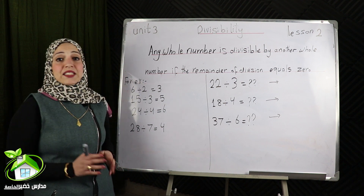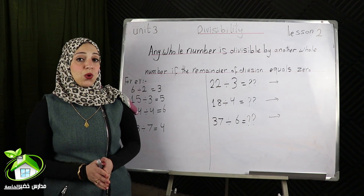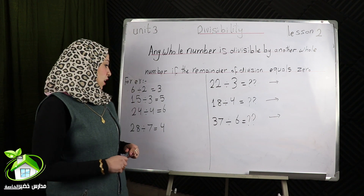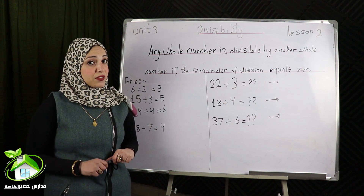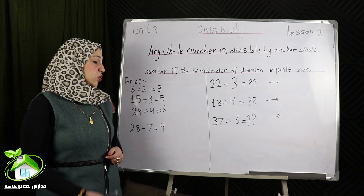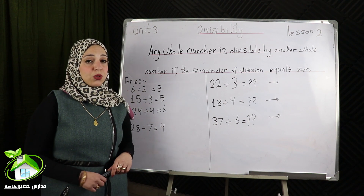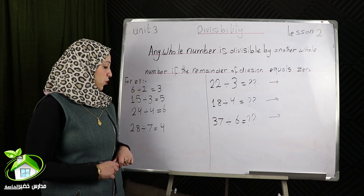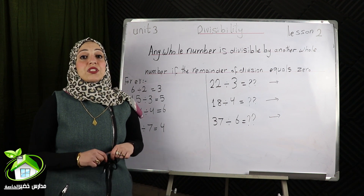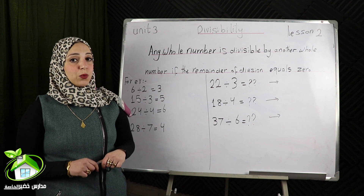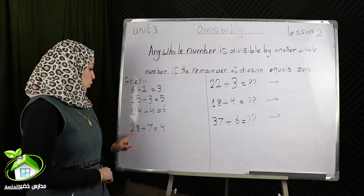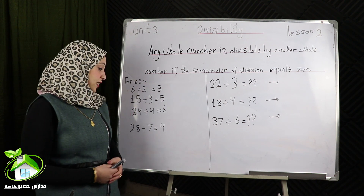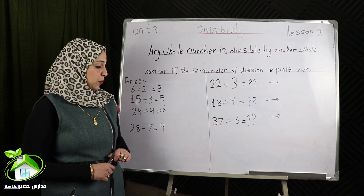For example, 6 divided by 2 equals 3 and the remainder equals 0. So I can say that 6 is divisible by 2 and also divisible by 3. Another one: 15 divided by 3 equals 5 and the remainder equals 0, so 15 is divisible by 3 and also divisible by 5. Another one: 24 divided by 4 equals 6 and the remainder equals 0, so 24 is divisible by 4 and also divisible by 6. The last one: 28 divided by 7 equals 4 and the remainder equals 0, so 28 is divisible by 7 and also divisible by 4.